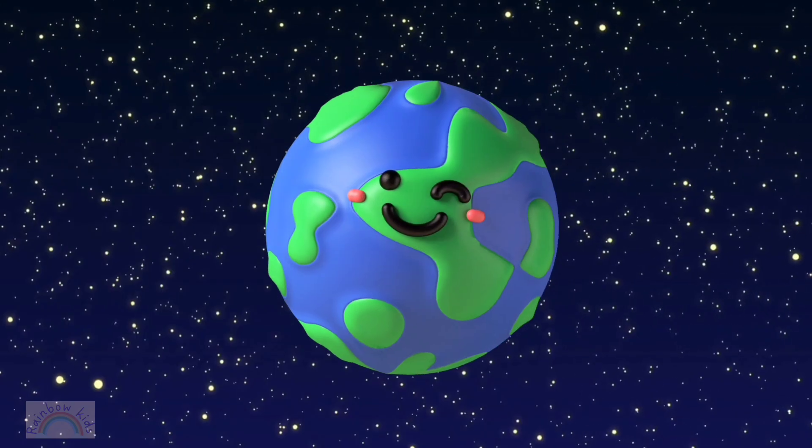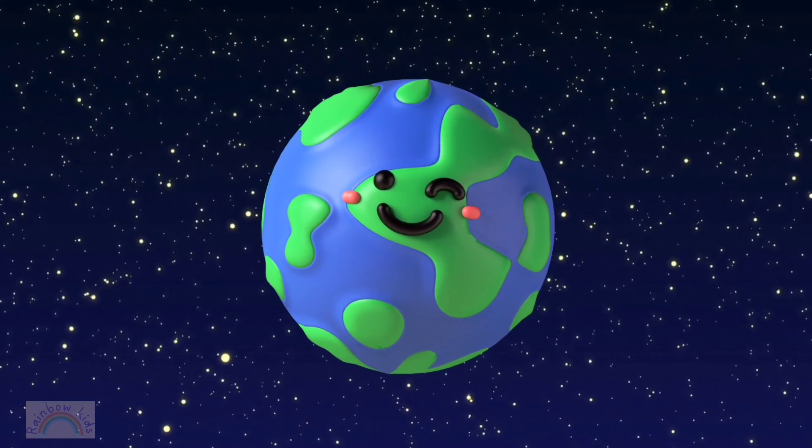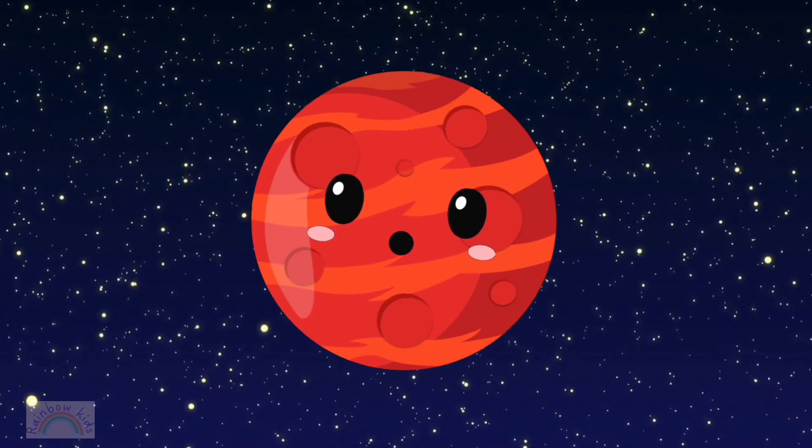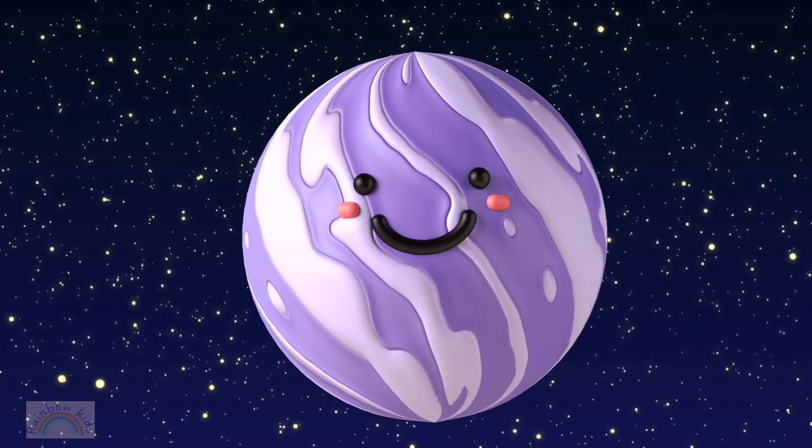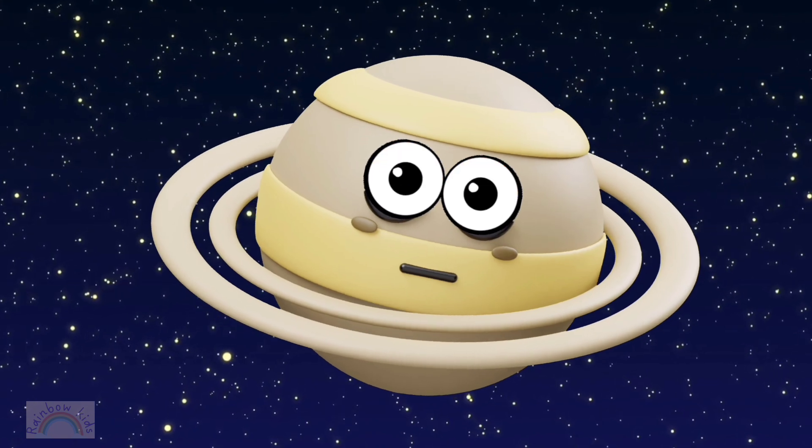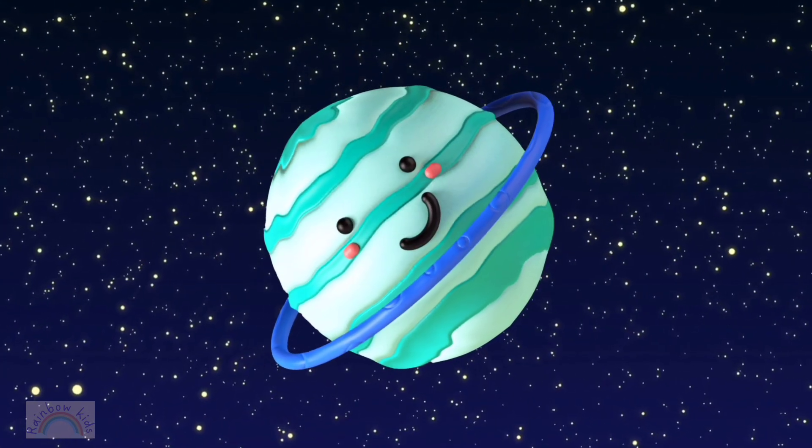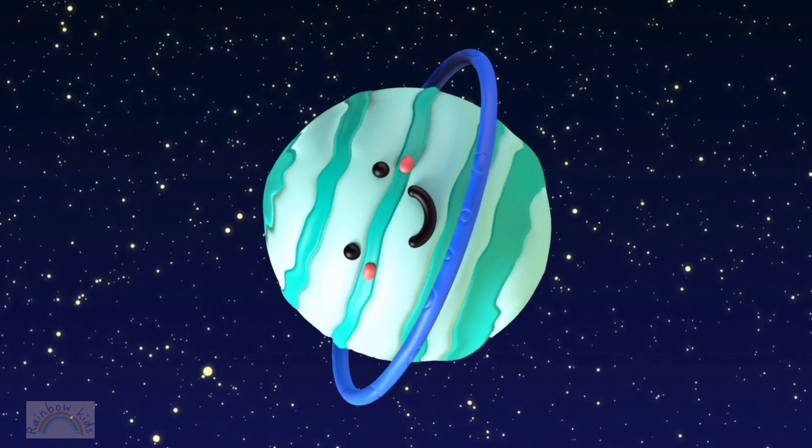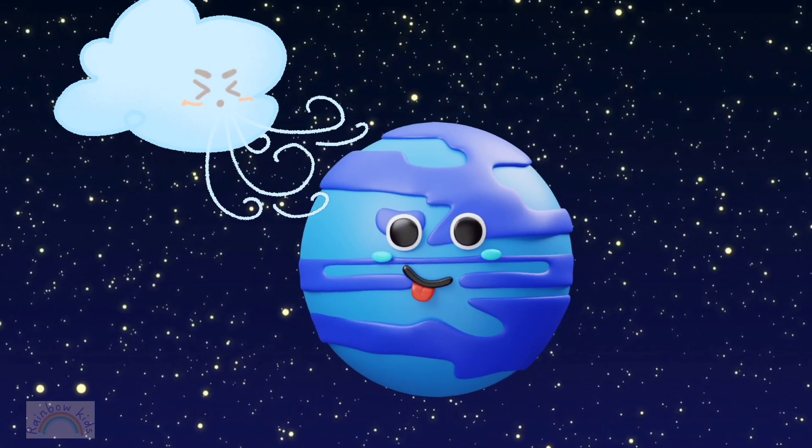Earth is home. It's blue and green. Mars is red. It's crater seen. Jupiter is big with a giant storm. Saturn's rings are round and warm. Uranus spins on its side. Neptune's windy with oceans wide.